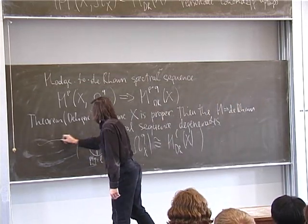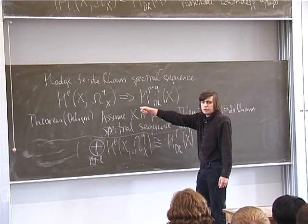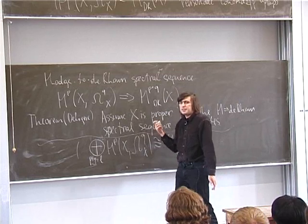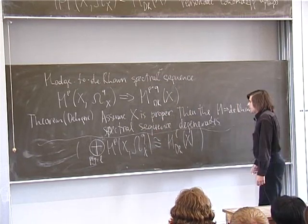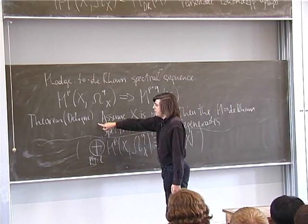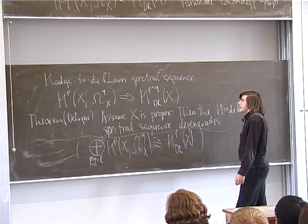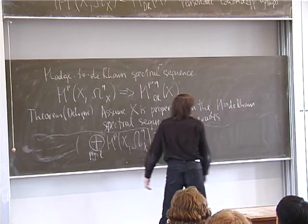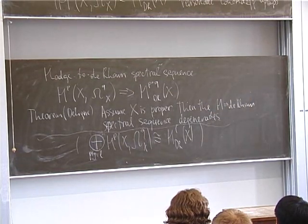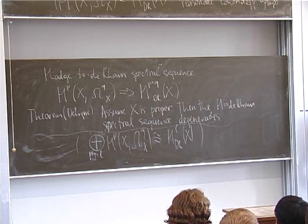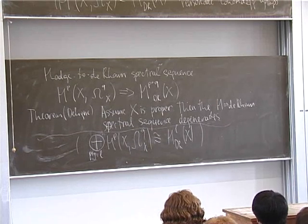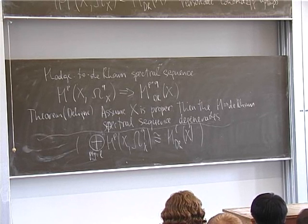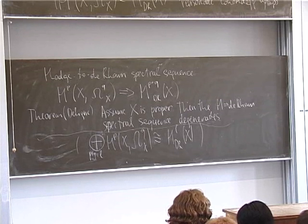This statement extracts everything from the general theory that you can formulate in a purely algebraic way. For this statement you don't need to know what is an analytic space or a C-infinity manifold. This is a statement of purely algebraic geometry, which can be proved by analytic means. But surprisingly, there is also an alternative proof which requires only algebraic geometry, nothing more. This is the method of Deligne and Deluszee.